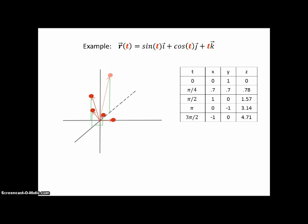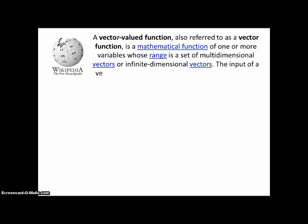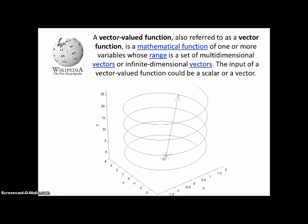If you connect all those values with a curve, you get a spiral winding up the z-axis — and down if you use negative values for t. From Wikipedia, a vector-valued function is a mathematical function of one or more variables whose range is a set of multidimensional vectors or infinite-dimensional vectors. The input could be a scalar or a vector. Here's a better picture of a spiral where the z-scale is larger so you can actually see it clearly.